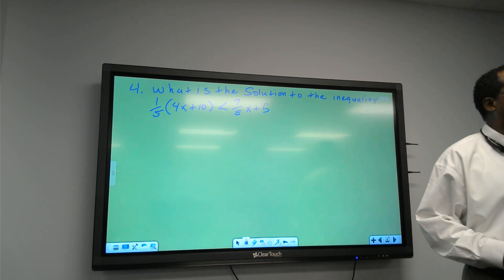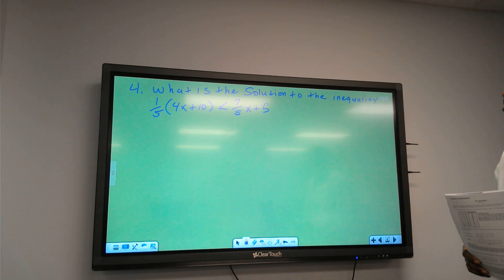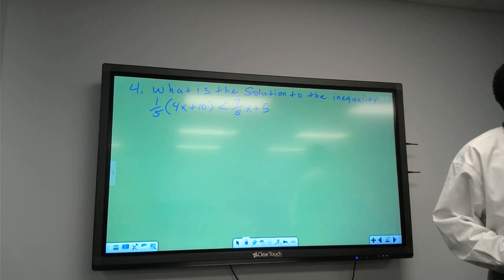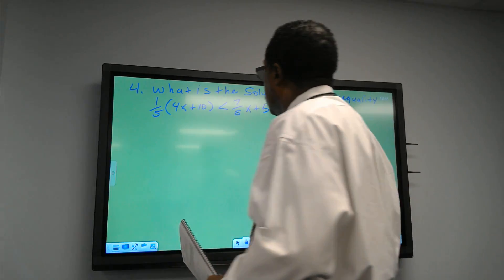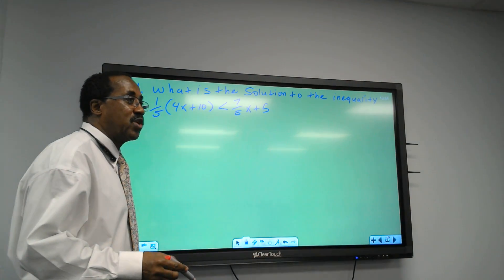4 over 5 plus 2 is less than, no, is greater than 7 over 5. Yes, sir. And what he's saying is the first thing we got to attack what?